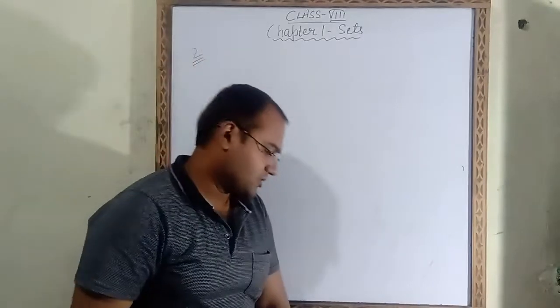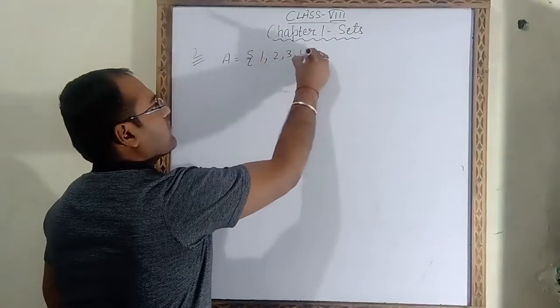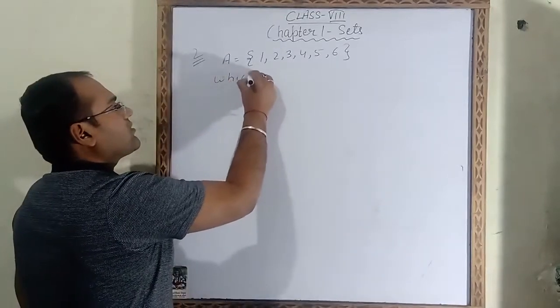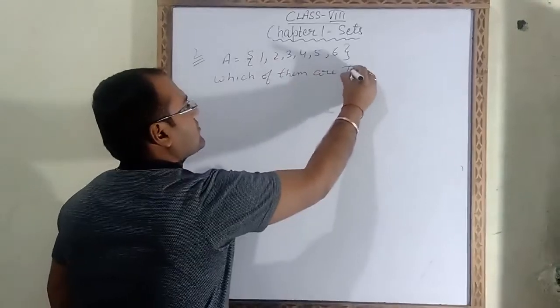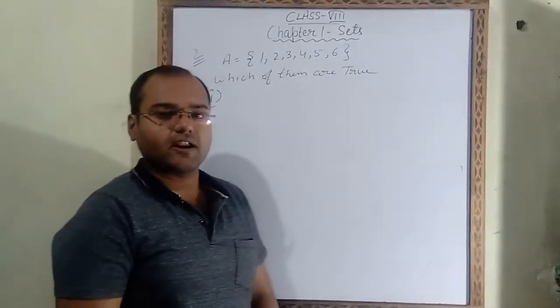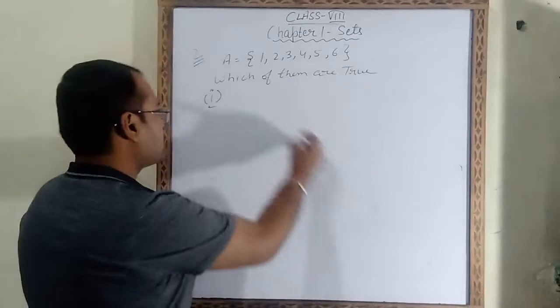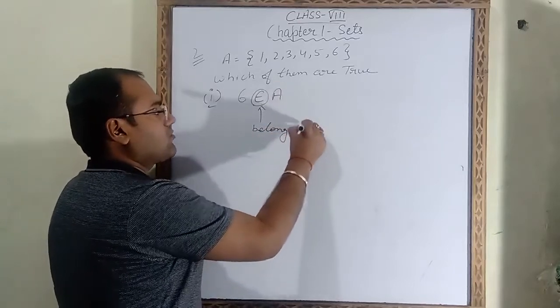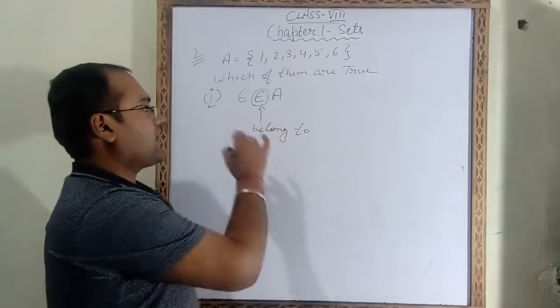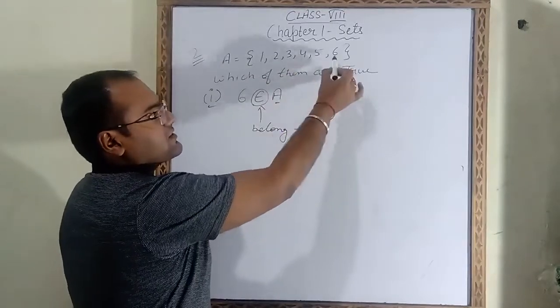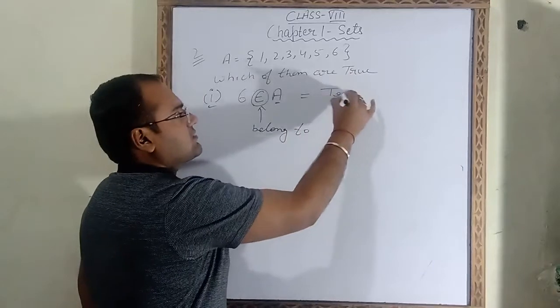Question number two: A = {1, 2, 3, 4, 5, 6}. We have to identify whether the given statement is correct or incorrect. First part: 6 ∈ A. This symbol is called 'belong to.' We have to check whether element 6 is coming in set A. In this set A, 6 is present. That means this statement is true.